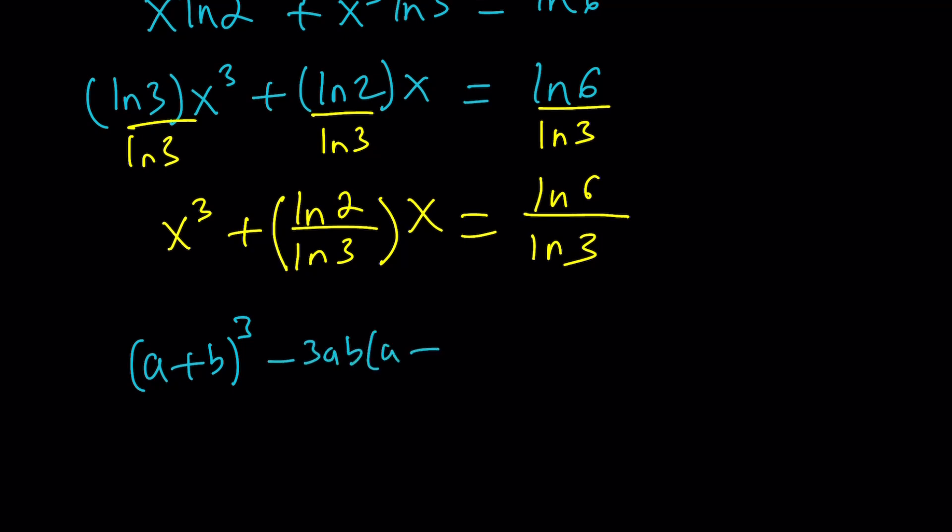I want my x cubed to be monic, so let's divide everything by ln 3. If you divide by ln 3 here, here, and here, you're going to get x cubed plus ln 2 over ln 3 multiplied by x equals ln 6 over ln 3. How do you use the cubic formula? Well,